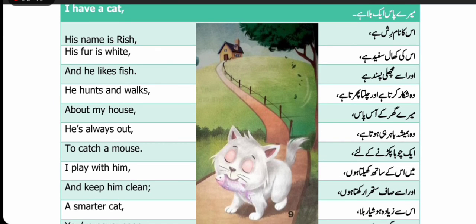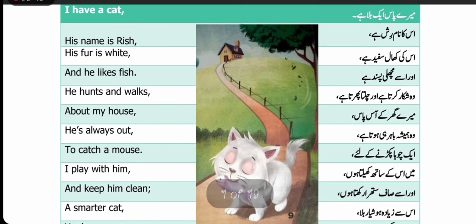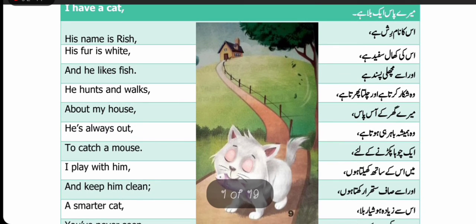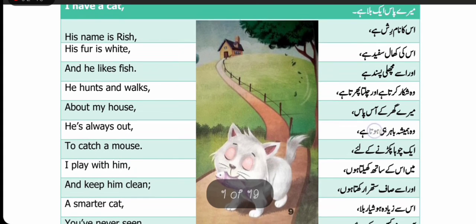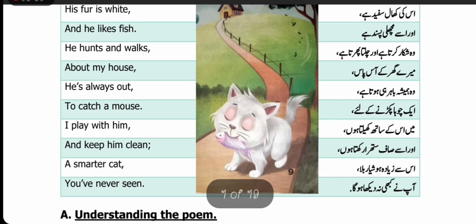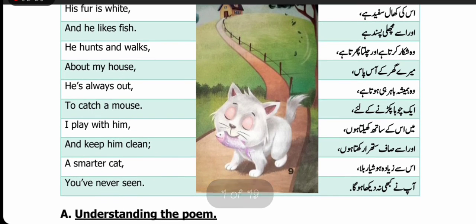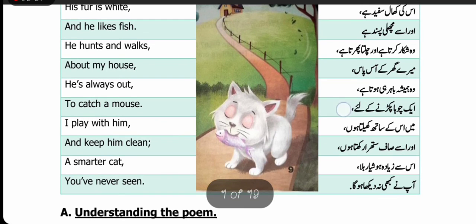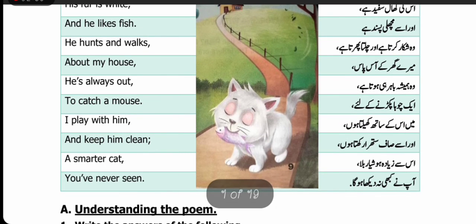'About my house.' یہاں about کا مطلب آس پاس آئے گا — میرے گھر کے آس پاس۔ 'He is always out.' Out کہتے ہیں باہر — وہ ہمیشہ باہر ہی ہوتا ہے۔ 'To catch a mouse.' Catch کا مطلب ہوتا ہے پکڑنا — ایک چوہا پکڑنے کے لیے۔